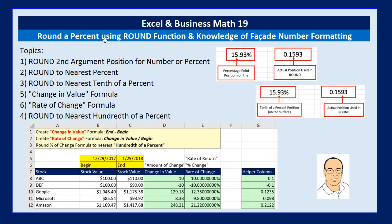Rounding a percent is one of those tasks in Excel that trips a lot of us up. The reason it trips us up is because we're often given percentages, and it's communicated to us how to round in terms of the percentage. So someone might ask, please round to the percentage point position. The problem with that is you can't rely on that position with the ROUND function.